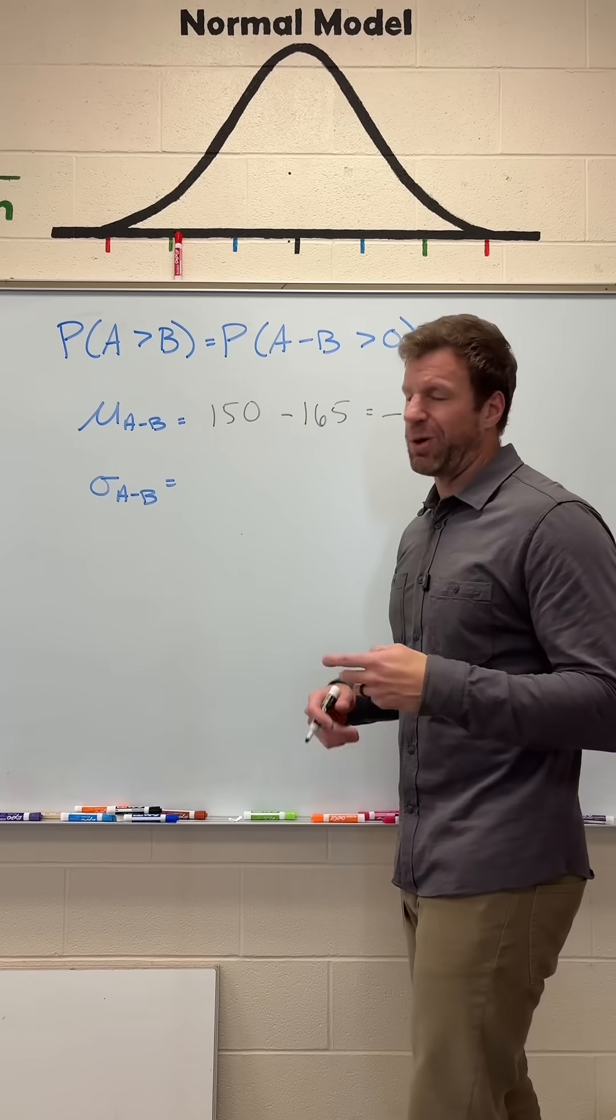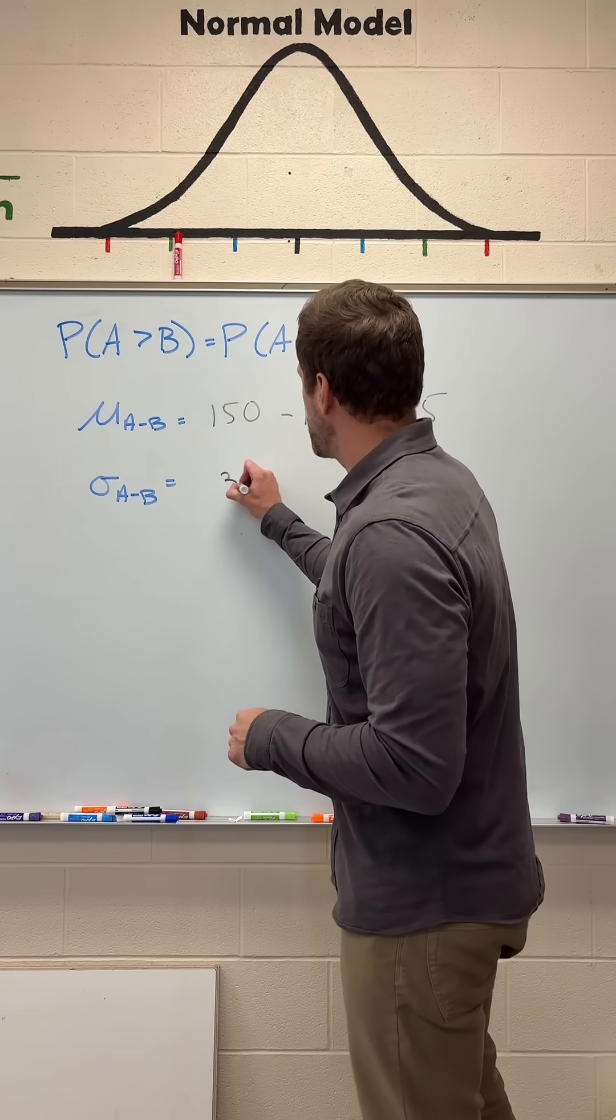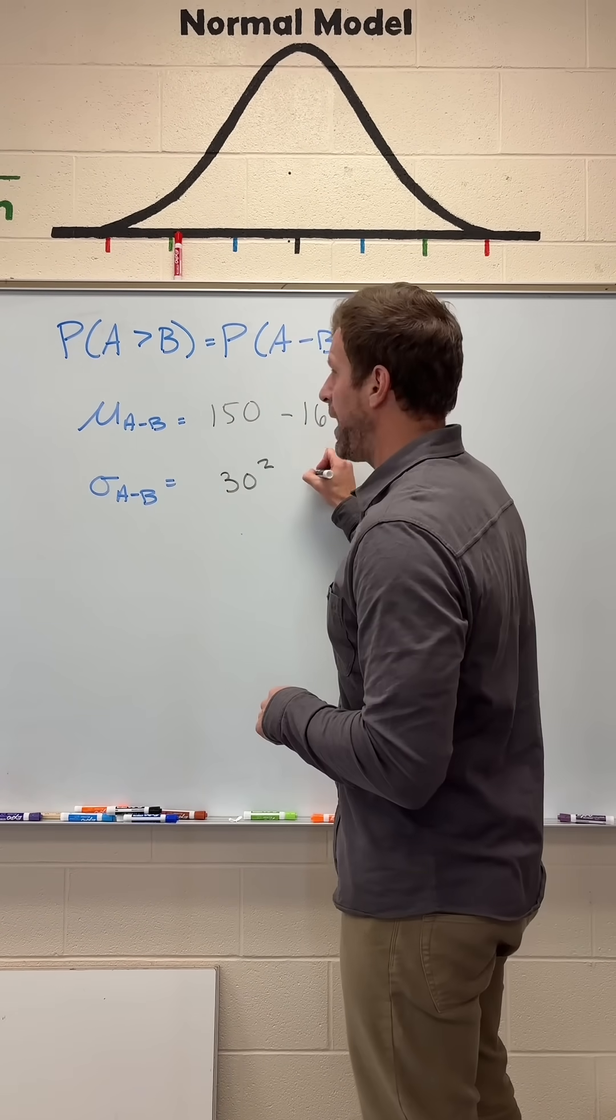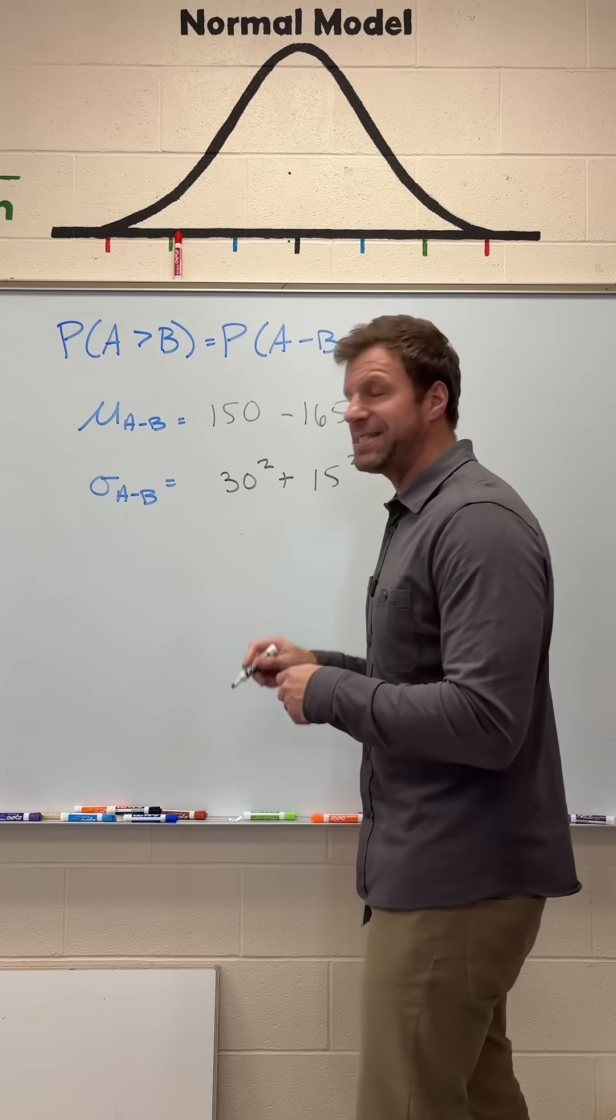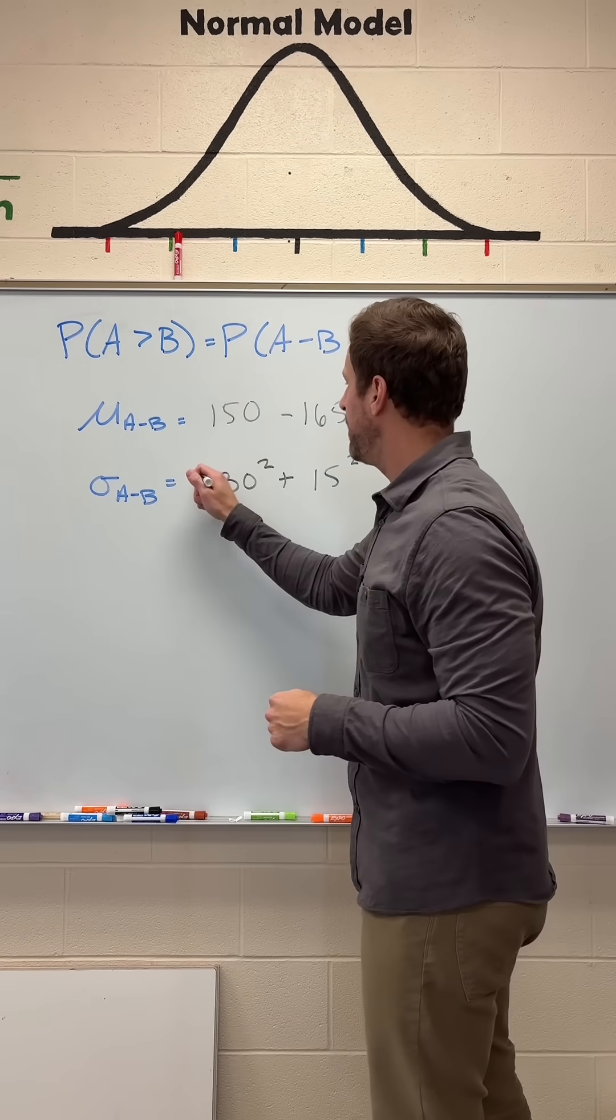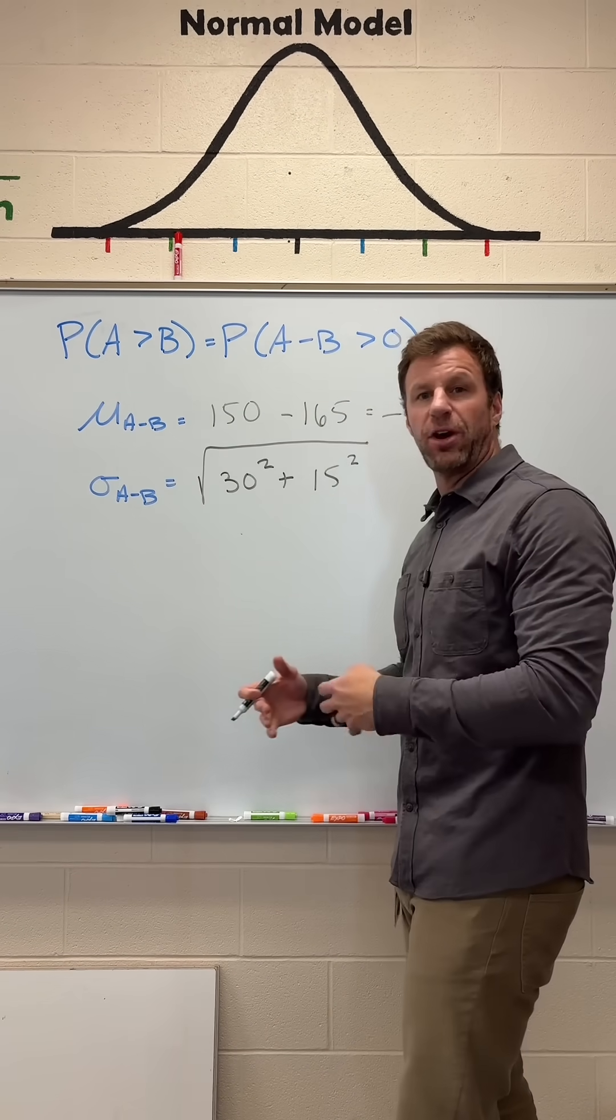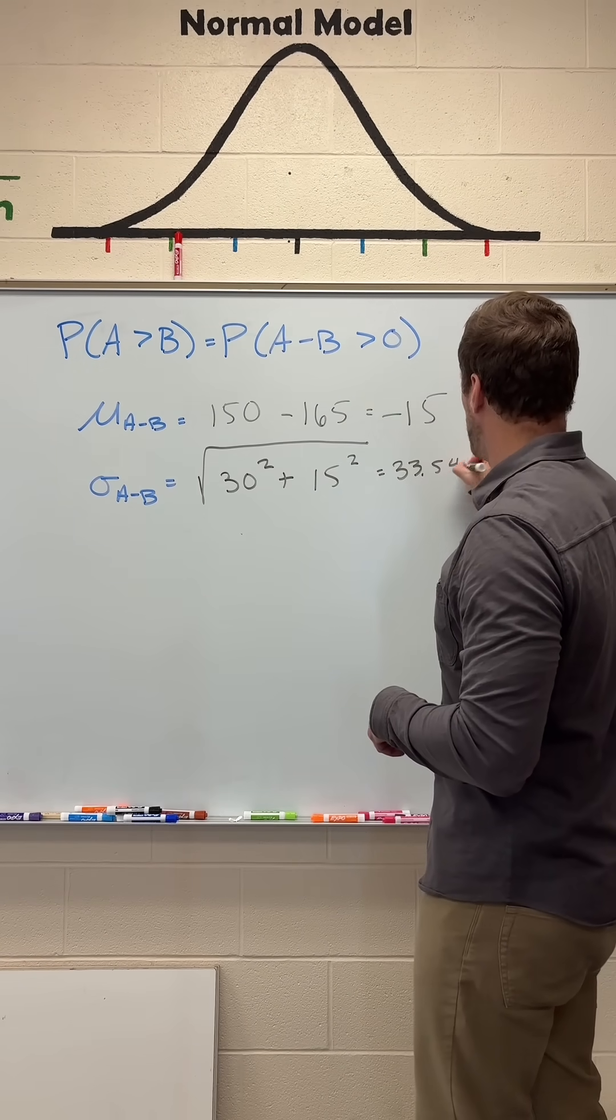What about the standard deviation? Well, remember, we cannot combine standard deviations. We are allowed to combine variance. So we have 30 squared, that's the variance for Andy, and then we have 15 squared, that's the variance for Bob, and we're going to add, because even though the problem is focusing on the difference, variance always builds up. Then we're going to take a square root of all that variance to get back to standard deviation, and we get 33.541.